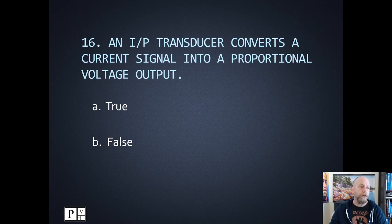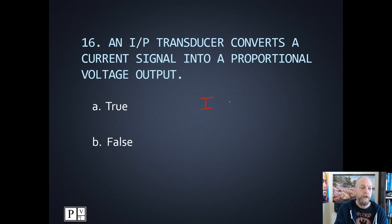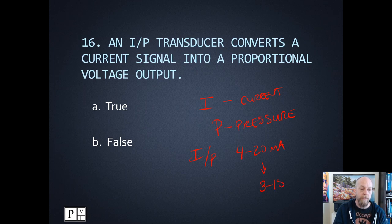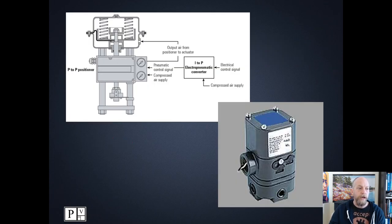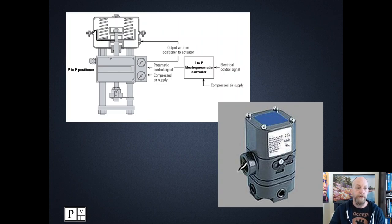Number sixteen: an I to P transducer converts a current signal into a proportional voltage output. I is for current, P is for pressure. This current to pressure transducer takes the standard 4 to 20 milliamp current and changes it to a 3 to 15 psi pressure — nothing there mentions voltage. Number sixteen is false. The current to pressure transducer was mounted on the side of a larger valve — current goes in, modulating 3 to 15 psi onto the top of the valve, pushing down on the diaphragm and spring to open and close the valve. Think of the I to P transducer as a variable solenoid.